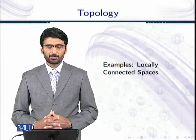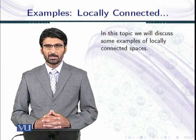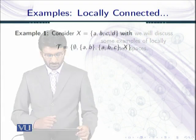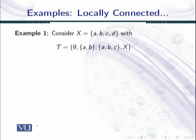In this topic we will discuss some examples of locally connected spaces. Our first example: let we have a set x with four points a, b, c, d with a given topology. This space is locally connected because it is locally connected at each of its points — at a, at b, at c, and at d. So let us check first for the point a.